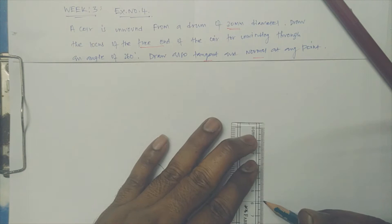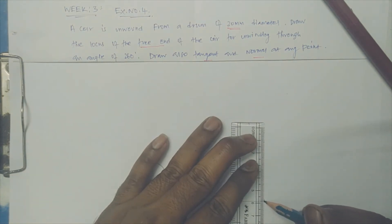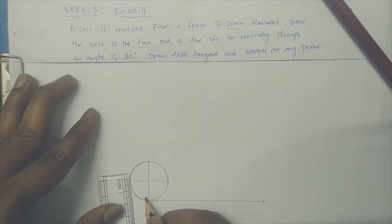Pi into 30 diameter is exactly 94 mm, 94.2. So I am dropping up to here. Let it be the end point of this profile. Let me mark this is P and this is Q.